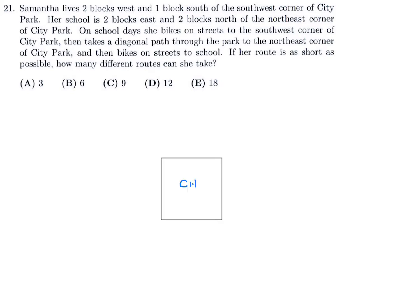This is City Park right here. We are told that Samantha is two blocks west and one block south. So let's say this is a block — two blocks west, one block south. So this is Sam right here, and this is the southwest corner. Her school is two blocks east and two blocks north of the northeast corner. So we've got to go two blocks east and then two blocks north. We've got to get from here to here.